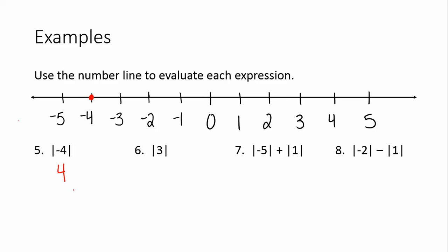How about 3? How far is 3 from 0? 1, 2, 3. The absolute value of 3 is 3. Hopefully you're getting the hang of absolute value. It's going to make negative numbers positive, and it's going to keep positive numbers positive, because it's a distance from 0.